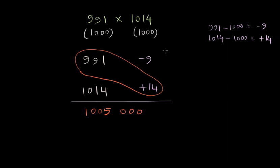Then for the next step, we want to multiply the supplements, which are like this: minus 9 times 14, which is going to be minus 126. So let's put a minus sign here and we'll write 126.